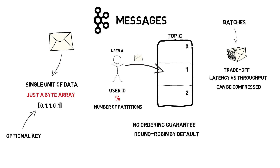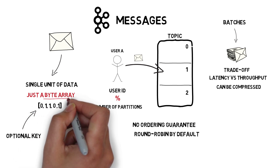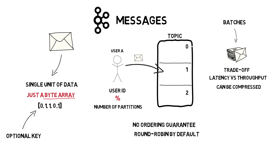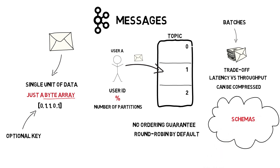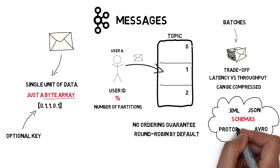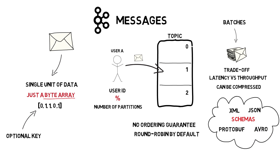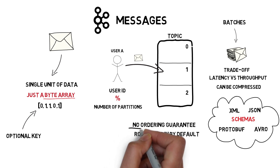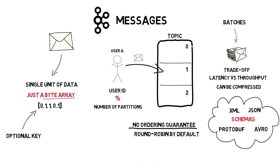Even though Kafka messages are just simple byte arrays, in most cases it makes sense to provide additional structure to the message content. There are multiple schema options available — the most popular ones are JSON, XML, Avro, and Protobuf. It's also important to emphasize that there are no ordering guarantees across multiple partitions of the same topic. The only way to achieve ordering for all messages is to have only one partition, which ensures events are always ordered by the time they were written into Kafka.